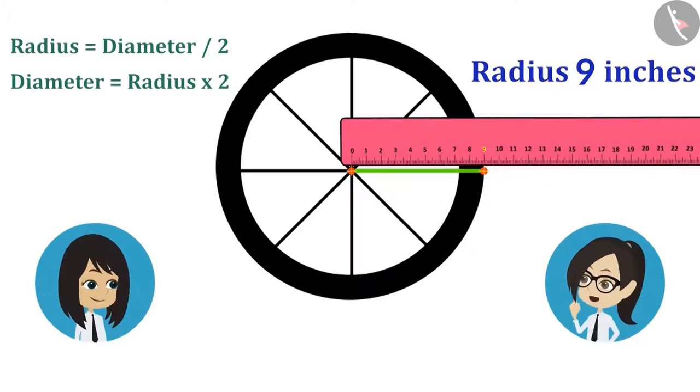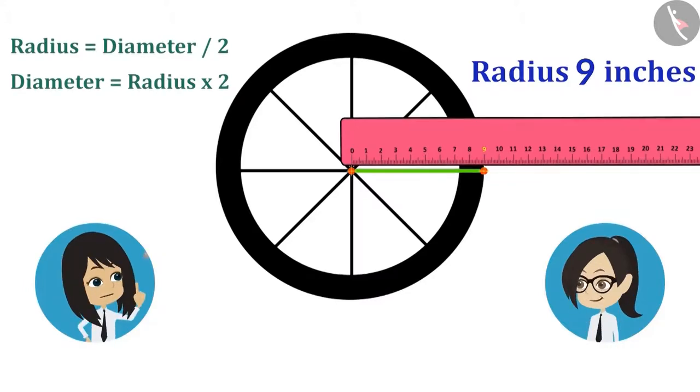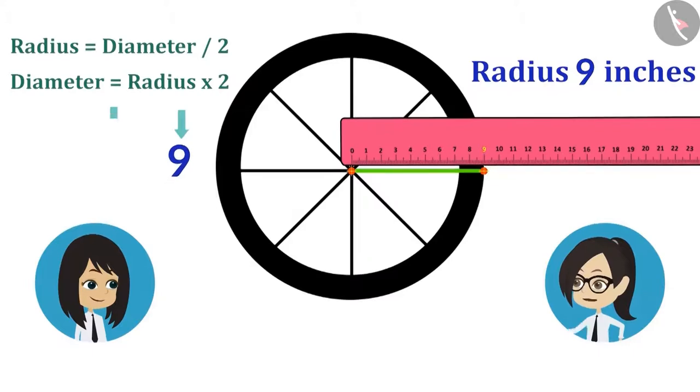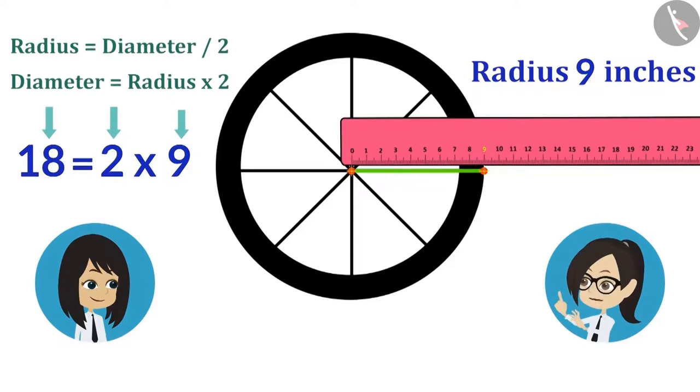Got it. Oh. That means if we multiply the radius by 2 then the measure of diameter will be known. Yes. The radius is 9 inches and multiplied by 2 it will be 18 inches. This means that the diameter of the wheel of our bicycle is 18 inches.